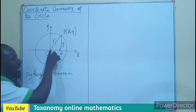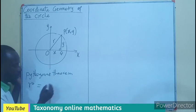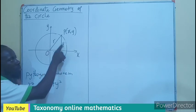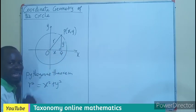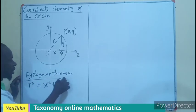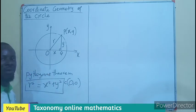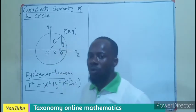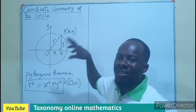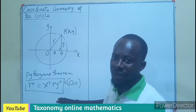Using the Pythagorean theorem, we say the square of the longer side equals the sum of the squares of the two shorter sides: x squared plus y squared equals r squared. This becomes the equation of a circle whose center is at zero, zero — meaning the center is the origin. So if you are asked to find the equation of a circle whose radius is given and the center is given as (0, 0), your equation is in this form.